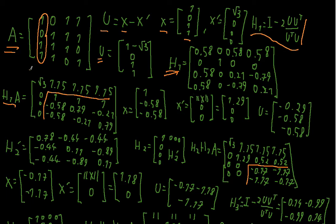As expected, the first column vector of A now has only the first component non-zero, which is the norm of the old vector — it's x prime, the reflected vector. The other components are zero. The results are: 1.15, 1.15, 1.15, 1.15 in the first row; then 1, 1, 1; −0.58, 0.79, −1.21; and −0.58, −0.21, 0.79.